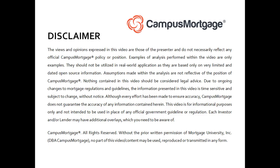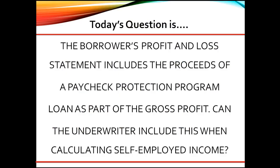Hi, everyone. Welcome back to Ask the Instructor, presented by Campus Mortgage. Today's question is: the borrower's profit and loss statement includes proceeds of a Paycheck Protection Program loan as part of the gross profit. Can the underwriter include this when calculating self-employed income?